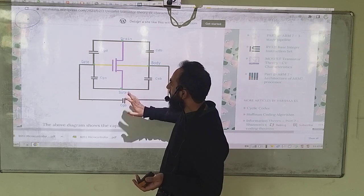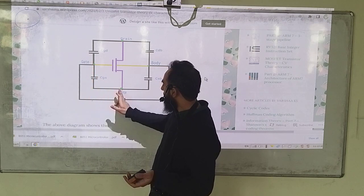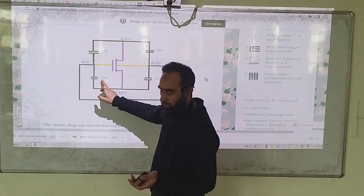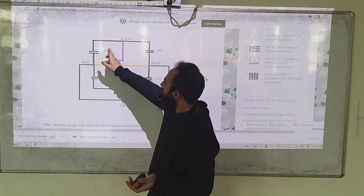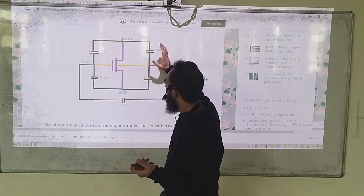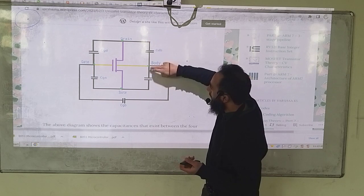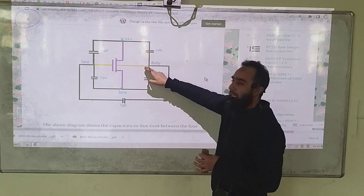So the first capacitance that you will identify is gate to source capacitance denoted by CGS. Second is CGD denoted by gate, denotes gate to drain capacitance. Now let's come to the drain side, drain to body, because I have 4 terminals actually in MOSFET.